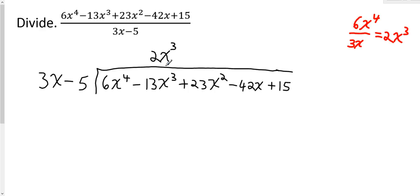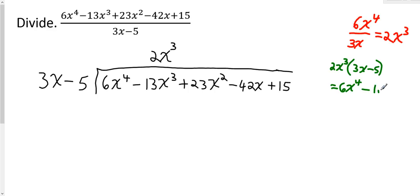Once I get that term, I'm going to take it and multiply it by the divisor — I'm distributing. I'm taking 2x to the 3rd and multiplying it by 3x minus 5, distributing to both terms. 2x to the 3rd times 3x is 6x to the 4th, and 2x to the 3rd times negative 5 is negative 10x to the 3rd. So this gives me 6x to the 4th minus 10x to the 3rd. I make sure to line these up under their like terms.